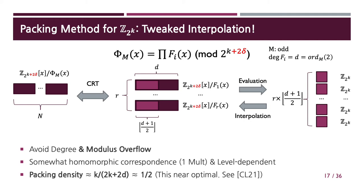Coming back to packing methods, we can now realize our packing design with the help of tweaked interpolation. One thing to be careful of is that since we lifted the target points by a factor of 2^delta, when multiplied, the lifting factor grows to 2^(2*delta). In this regard, we must use a plaintext modulus with an extra delta to avoid modulus overflow and prevent information loss. Our tweaked interpolation packing then offers somewhat homomorphic correspondence up to one multiplication, and the packing method is also level dependent. We can choose delta to be roughly half of d. Thus, the packing density of our tweaked interpolation packing is roughly one half when d is sufficiently smaller than k, which is the case for typical parameters of actively secure MPC over Z2K. Moreover, in a recent paper, we proved that this is near optimal.